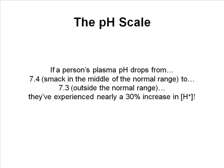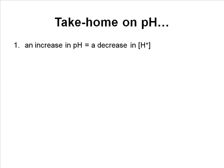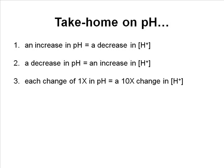So keep in mind a few things about pH in this take-home. One, an increase in pH is a decrease in hydrogen ion concentration, and a decrease in pH is an increase in hydrogen ion concentration. Each change of 1x in pH represents a 10x change in hydrogen ion concentration, and these are multiplicative. So if pH changes three steps, that's 10x10x10, 10x10 is 100x10 is 1000, fold change.